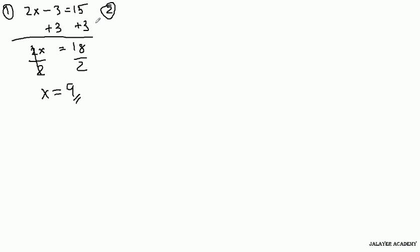Second problem. We're going to do one with division. x divided by 3 minus 2 equals 15. First thing we deal with is the addition or subtraction. So plus 2 on both sides. What we're left with is x over 3 equals 17.